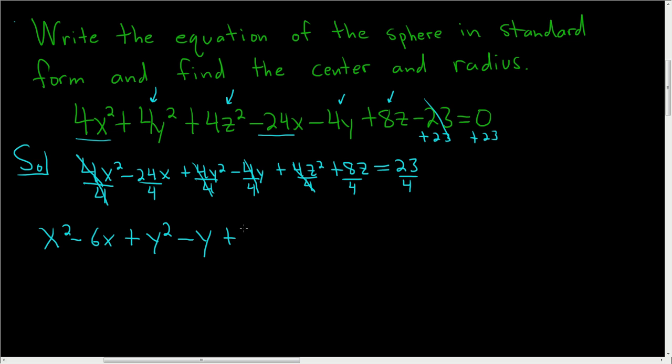These cancel, so we get z squared. And 8 over 4 is 2, so we get 2z. And this is all equal to 23 divided by 4.